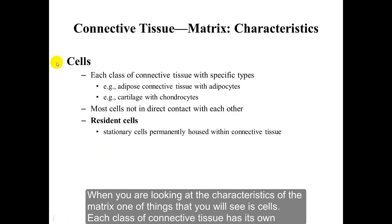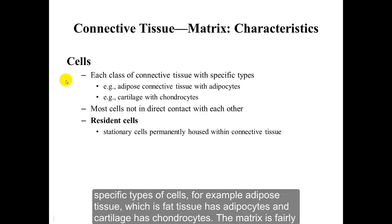When looking at the characteristics of the matrix, one of the things you will see is cells. Each class of connective tissue has its own specific types of cells. For example, adipose tissue, which is fat tissue, has adipocytes, and cartilage has chondrocytes.